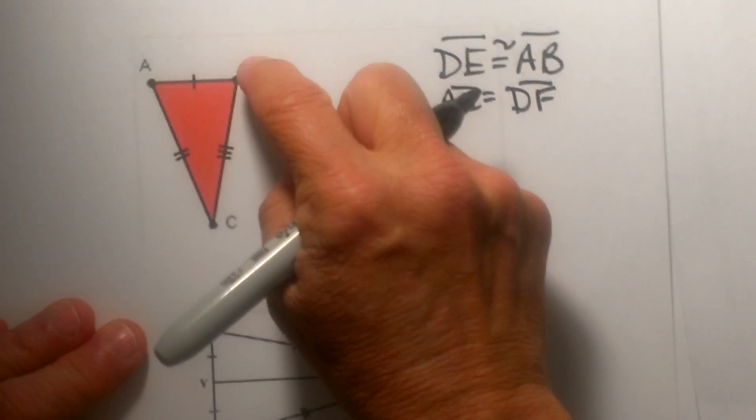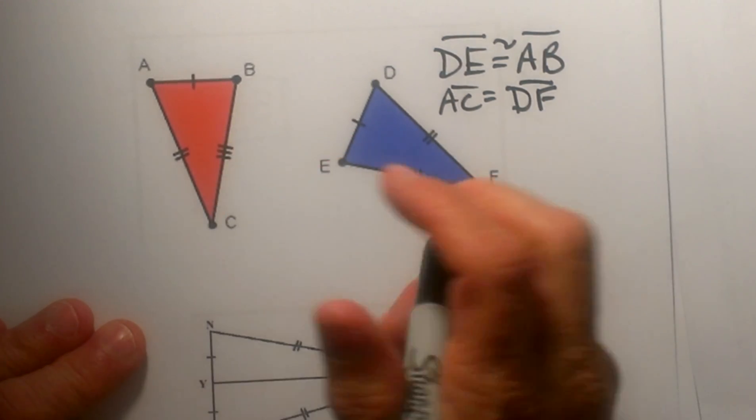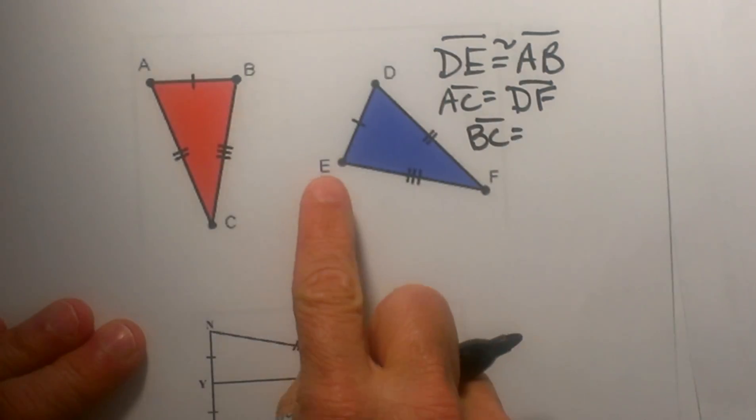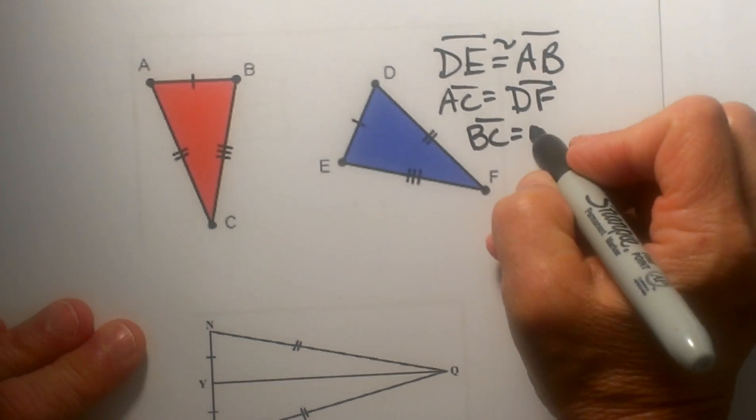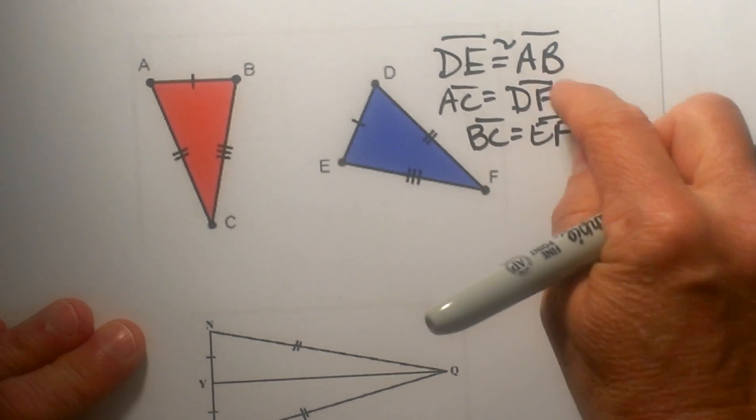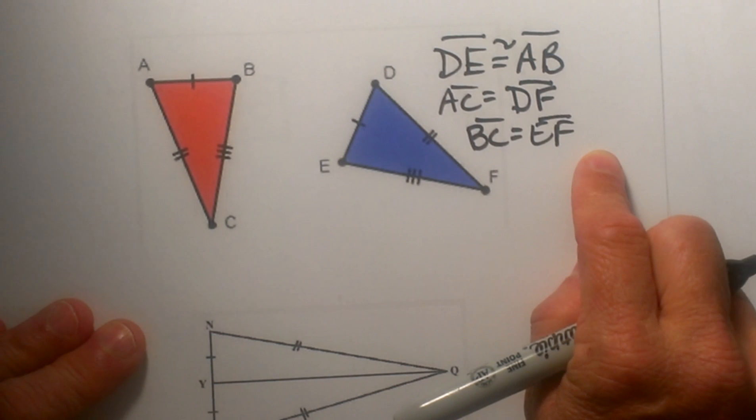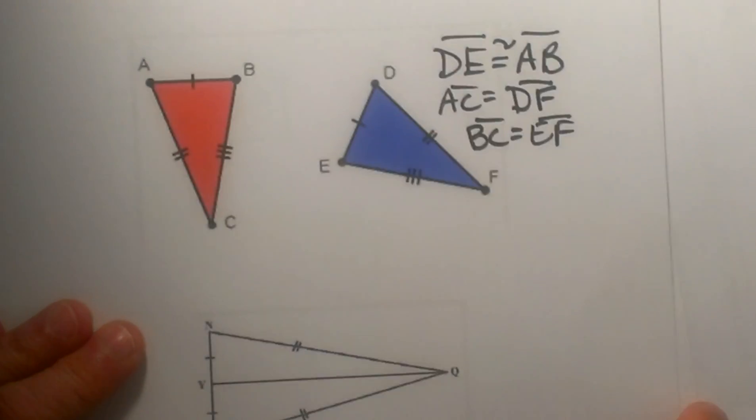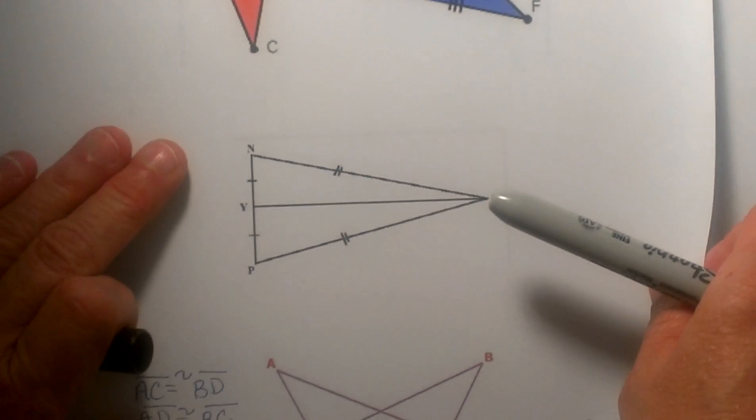And then the third side BC has three marks on it, so BC has to be congruent to EF. So once you get three congruent sides in a triangle, you know that the triangle has to be congruent. So that is when you use side-side-side. It is actually one of the easiest postulates to see.